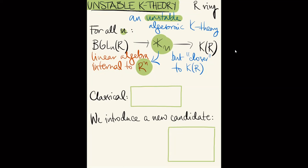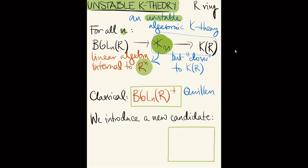The plus construction is a homotopical construction due to Quillen, defined by a universal property. The key point is that it preserves homology — it's a homology isomorphism — so we preserve the homology of the general linear group, but we correct the fundamental group to be closer to that of the K-Theory space, closer to K_1. What we do in this project with Dustin is introduce a new candidate for unstable algebraic K-Theory.